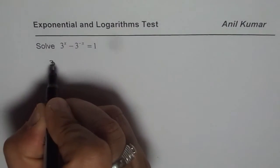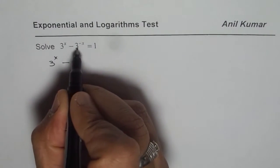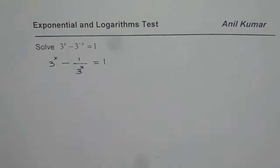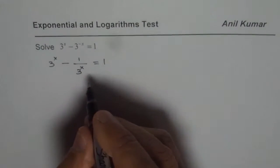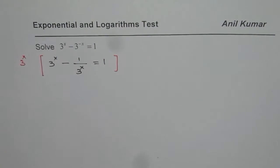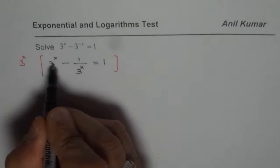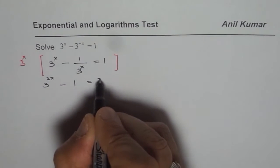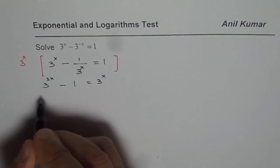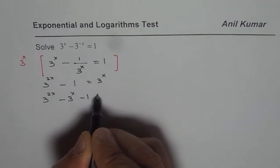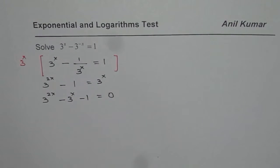The equation given to us is 3 to the power of x minus — when it is 3 to the power of minus x, I could write this as 1 over 3 to the power of x, equals to 1. Now we can multiply both sides by 3 to the power of x, so every term will be multiplied by 3 to the power of x. Then you get 3 to the power of 2x minus 1 equals to 3 to the power of x. Bringing them together on the left side, we get 3 to the power of 2x minus 3 to the power of x minus 1 equals to 0. That is a quadratic equation which we need to solve.